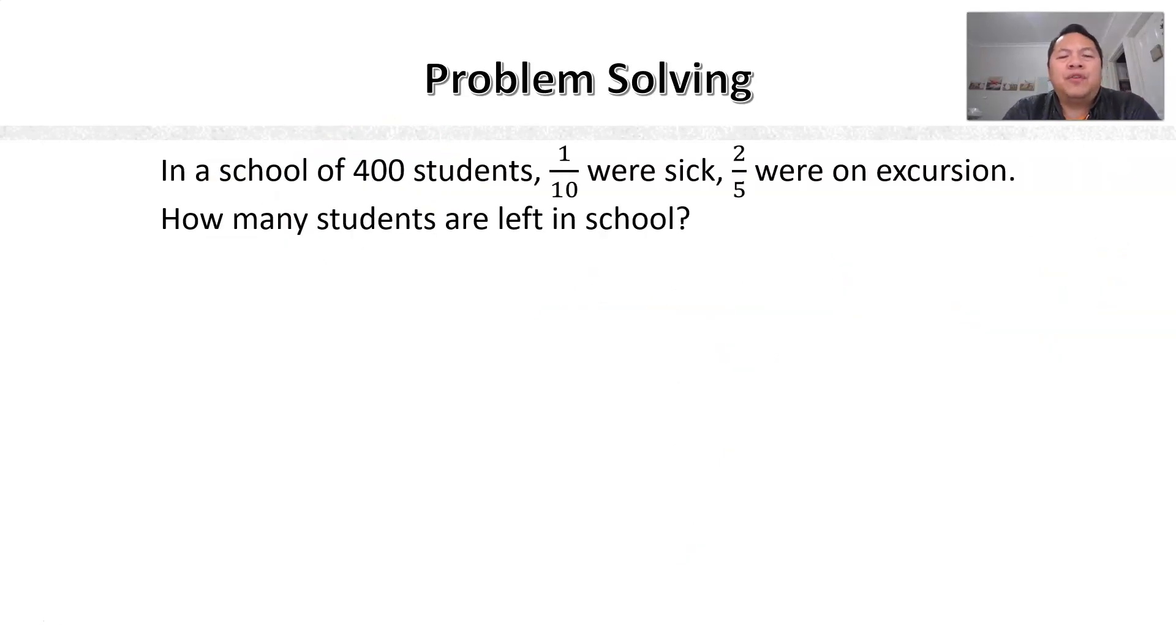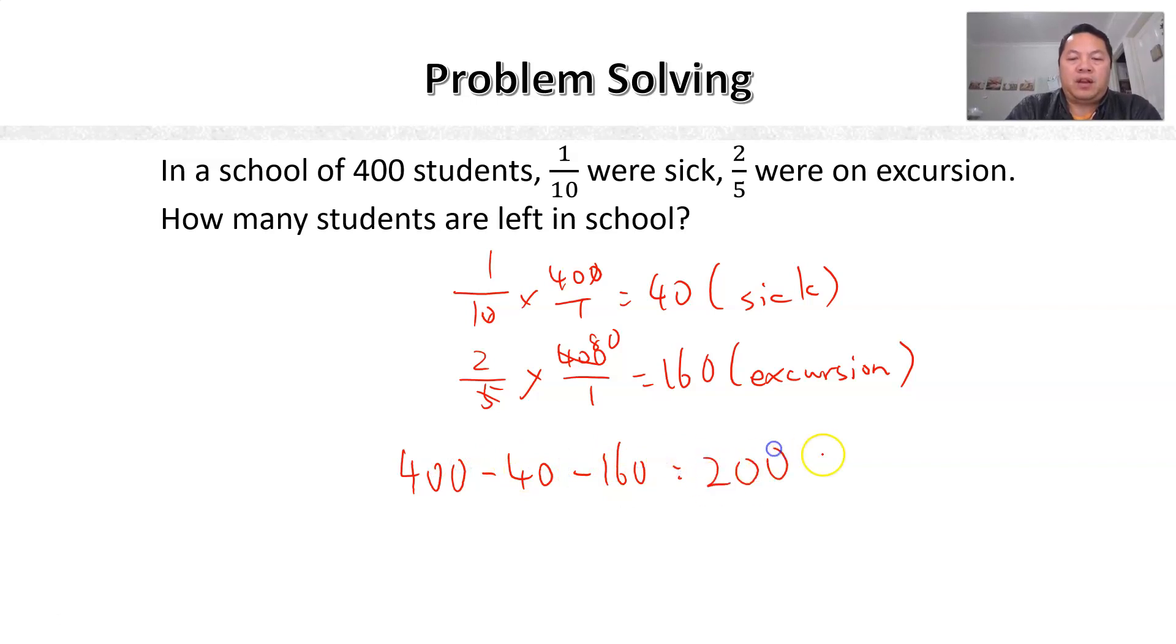So another question here. In the school of 400 students, 1/10 of them were sick, 2/5 were on excursion. How many pupils are left in the school? Oh, that's a good one. Let's find how many people were sick. So 1/10 of 400 were sick. So 40 were sick. 2/5 on excursion, 2/5 of the total, right? So this is 80, so 160 on excursion. So how many were left? Simply means 400 minus 40 minus 160, you get 200 are left in the school. Easy.